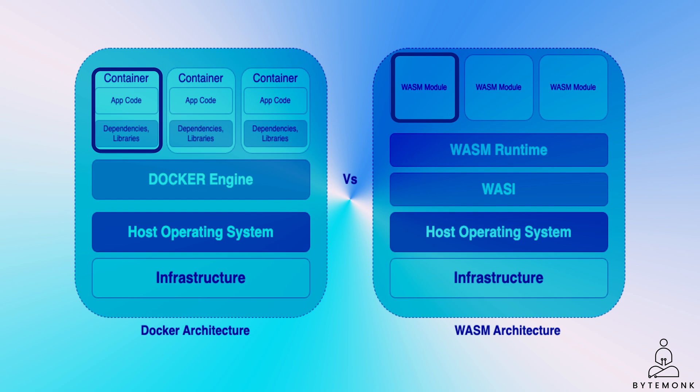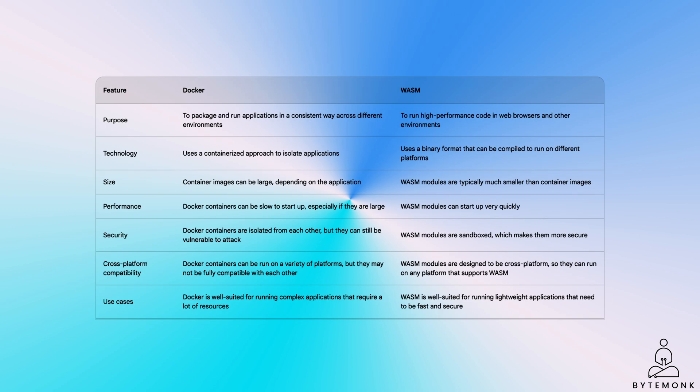I encourage you to pause the video and take a closer look at the key differences between Docker and WebAssembly. This will help you gain a deeper understanding of their unique features and capabilities. Clearly, they have different strengths and weaknesses. Wasm can be used to replace Docker in some cases, but it is not always the best choice. For example, if you need to deploy an application to a platform that does not support Wasm, then you will need to use Docker. However, if you need to deploy an application to a variety of platforms, then Wasm can be a good choice.